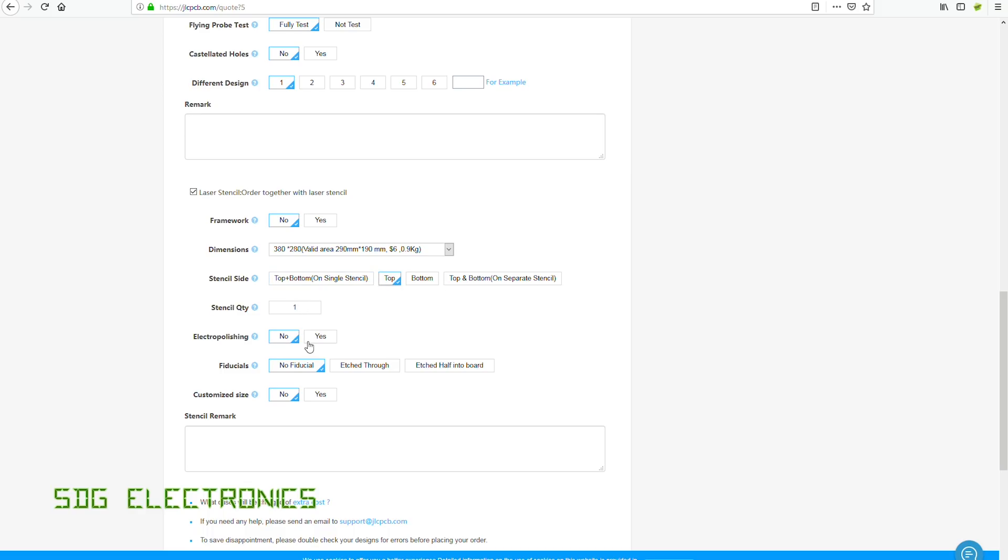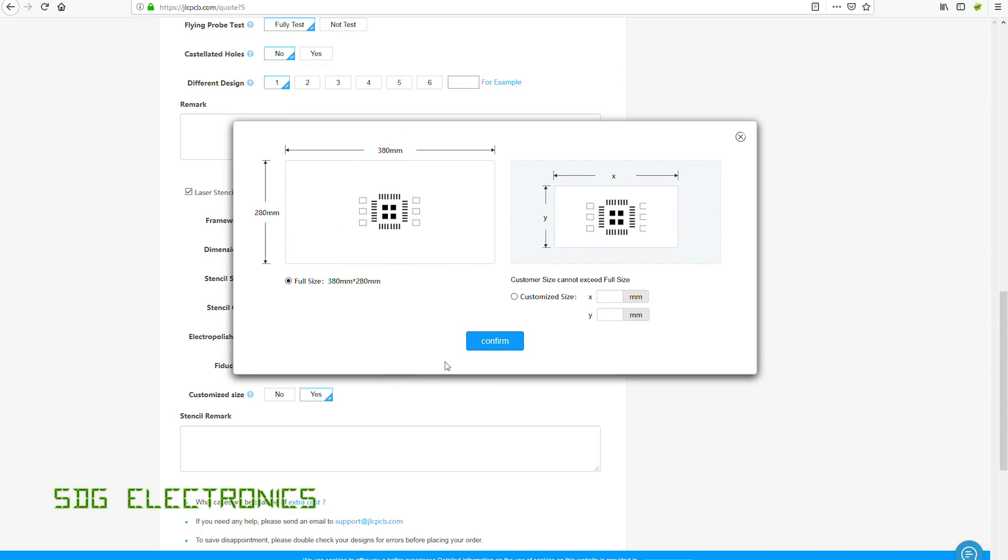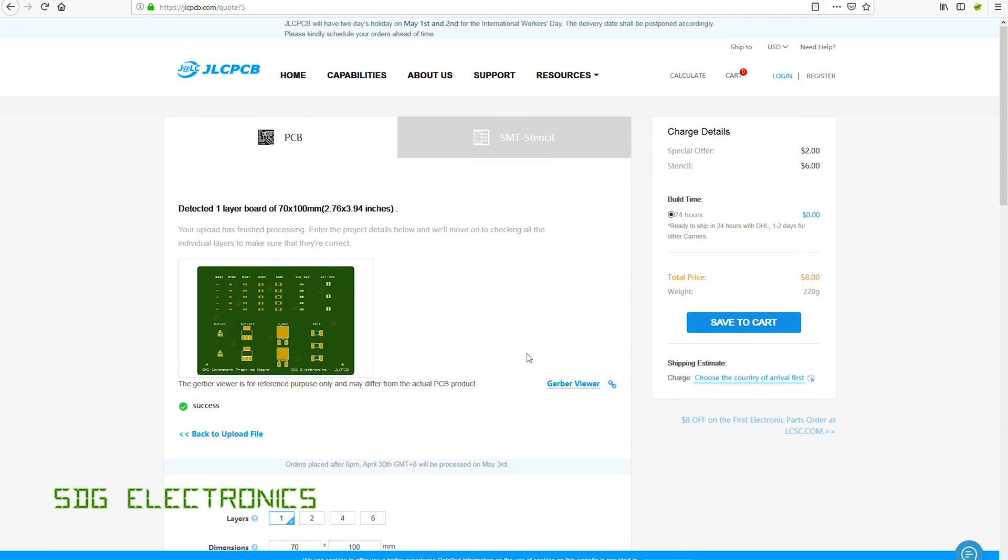One stencil, no electropolishing, and no fiducials. Here we can choose our customized size - I think that was 70 by 100 millimeters. Here you can see the PCBs are $2 and the stencil is only $6, so an absolute bargain for these PCBs and stencils.